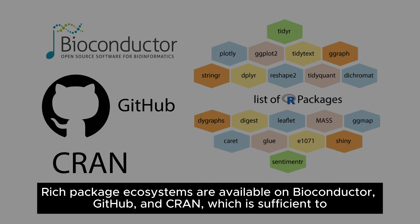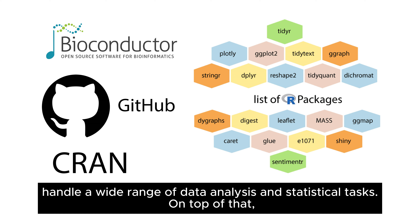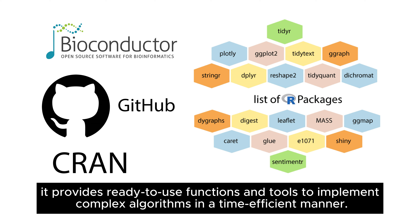Extensive package collection. Rich package ecosystems are available on Bioconductor, GitHub, and CRAN, which is sufficient to handle a wide range of data analysis and statistical tasks. On top of that, it provides ready-to-use functions and tools to implement complex algorithms in a time-efficient manner.